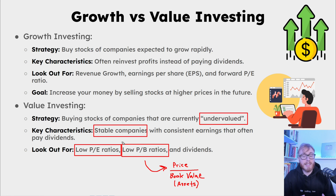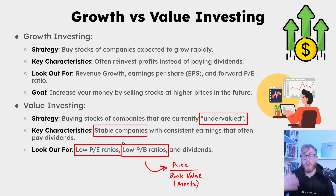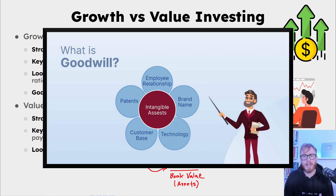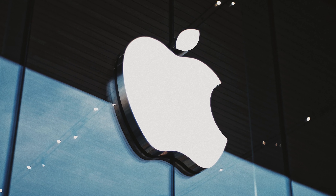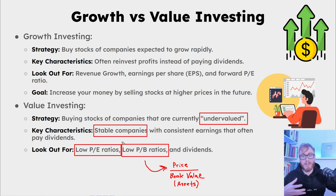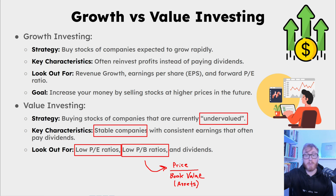Assets can be physical like factories and machines, or intangible assets — things that make a company valuable even though they're not physical. These could be patents and legal rights to produce a specific product, or something called goodwill. Goodwill is basically the premium value a company has due to its reputation or customer base. For example, one factor that makes Apple very valuable is its huge, loyal customer base and one of the most recognizable brands in the world — this leads to high goodwill.